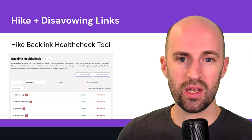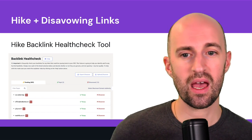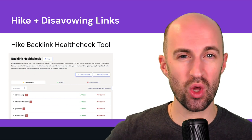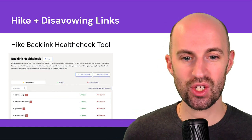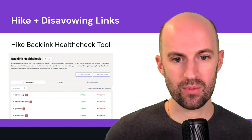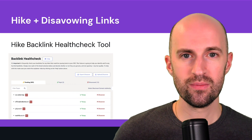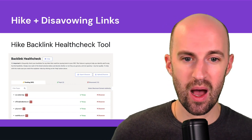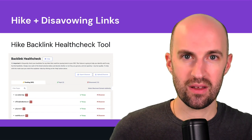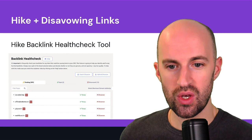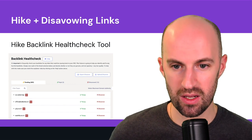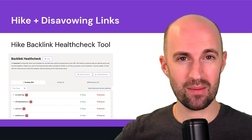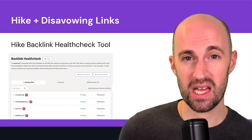In Hike SEO, you can also help with this disavow links process because Hike has a backlink health check tool. It's useful for spotting potential spammy or low quality sites that you can review and add to a shortlist. From that shortlist, you can export a disavow file and upload it to Google Search Console, or download an existing one from Search Console, add to it, and re-upload it. You can see domain authority scores — low domain authority often goes hand-in-hand with spammy links.